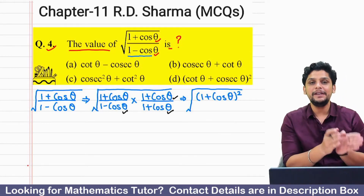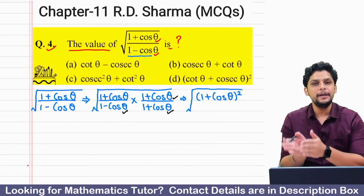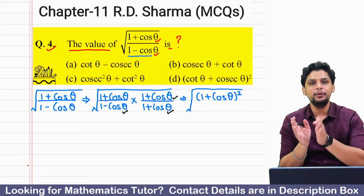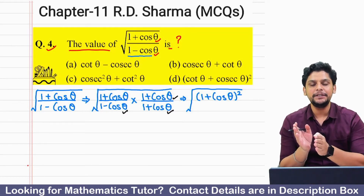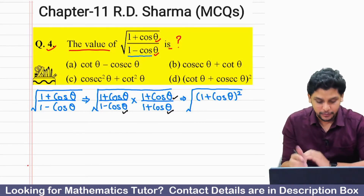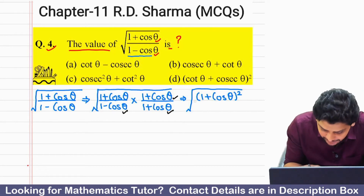Now this is of the form (a minus b) and (a plus b), so (a minus b) into (a plus b), which gives us a square minus b square.